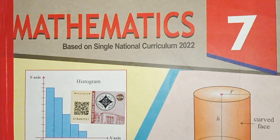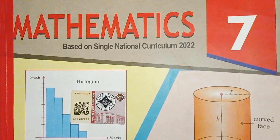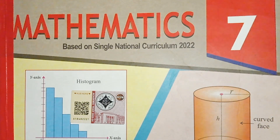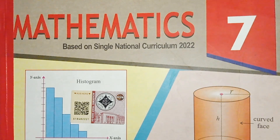Bismillah ar-Rahman ar-Rahim. Rabbi Yassir wa laath wa assir wa tammi bil hai. Rabbi Zidni Ilma. Assalamu alaikum. Hope you all are good. This is the mathematics book of class 7. Today we will do exercise 2.10. Let's start students.